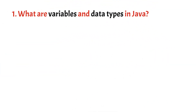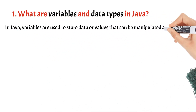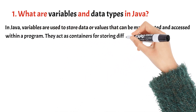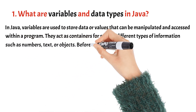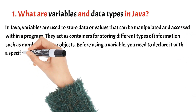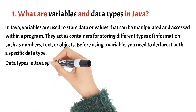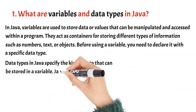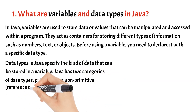What are variables and data types in Java? In Java, variables are used to store data or values that can be manipulated and accessed within a program. They act as containers for storing different types of information, such as numbers, text, or objects. Before using a variable, you need to declare it with a specific data type. Data types in Java specify the kind of data that can be stored in a variable. Java has two categories of data types: primitive and non-primitive, also known as reference types.